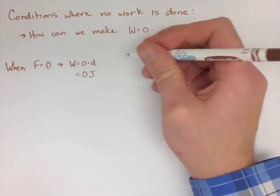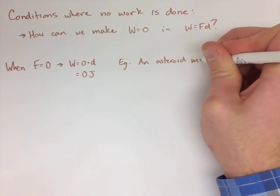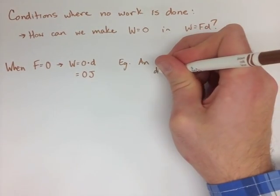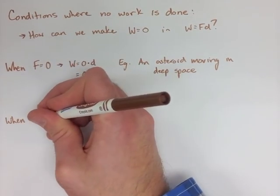The first way to do it would be to make our force equal to 0. When force equals 0, we have 0 times displacement, which is 0. An example of this is just an asteroid floating around in space—there's no force being applied to it, but it does have a displacement. But there's no work being done.